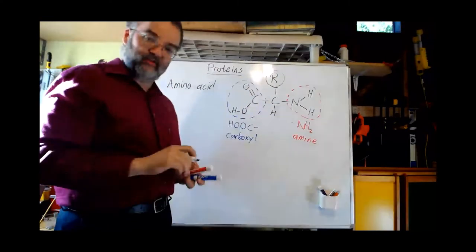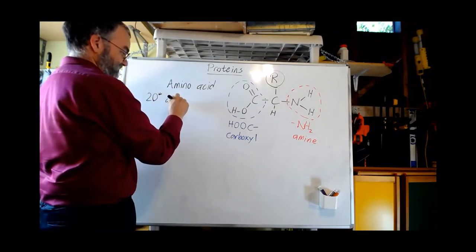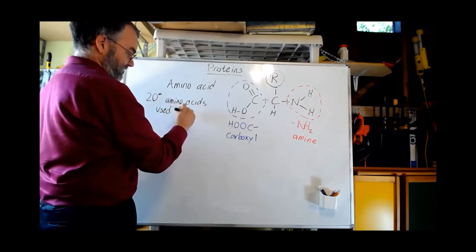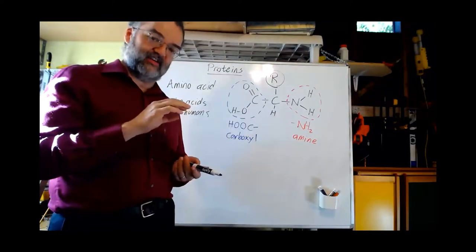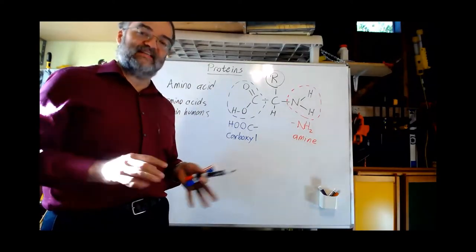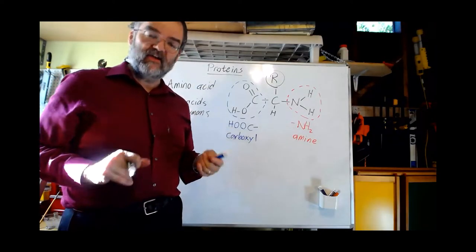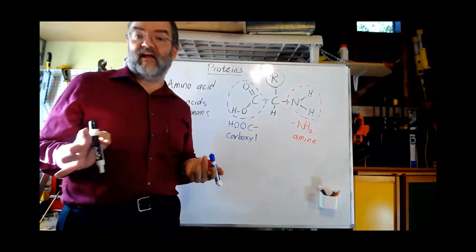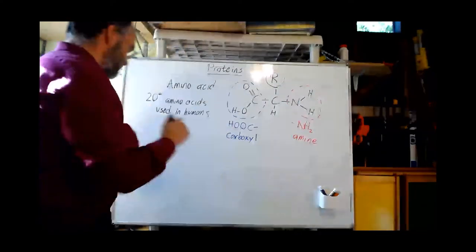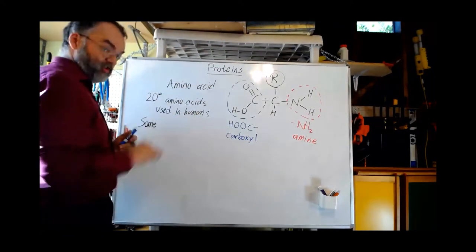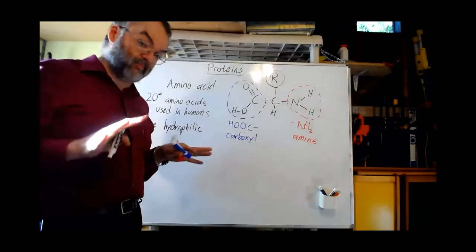The part labeled R is a side group. There are 20 different amino acids used in human biochemistry — at least one is sometimes modified after insertion, but we typically talk about 20. What makes amino acids different from each other is this R group. It can be anything from a single hydrogen — that's glycine — to large complex multi-ring structures like phenylalanine. Each amino acid has its own different R group, and the characteristics of that R group change how that amino acid behaves.